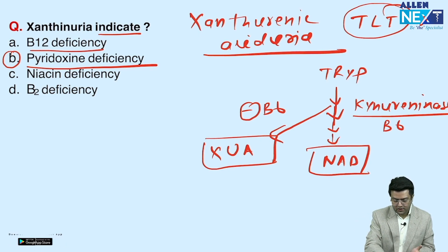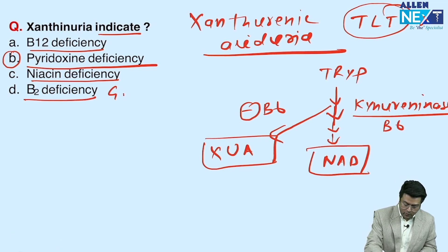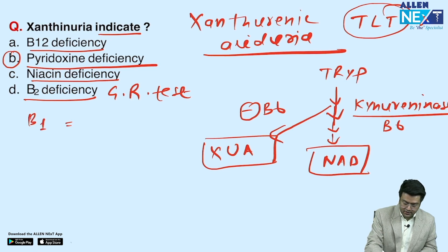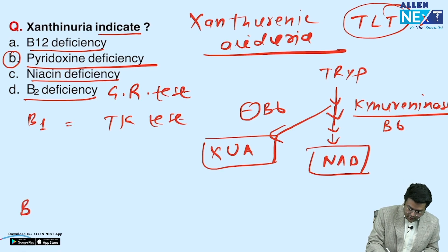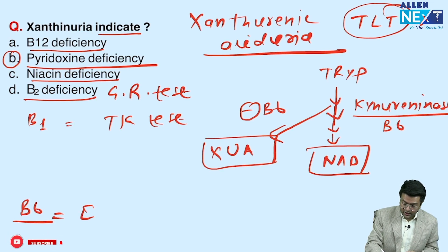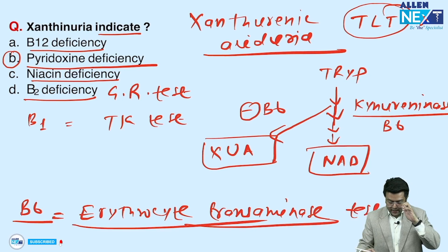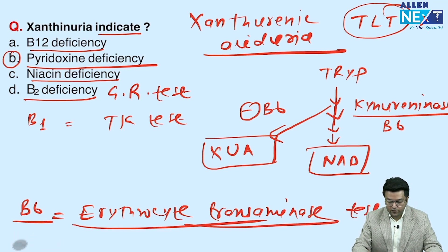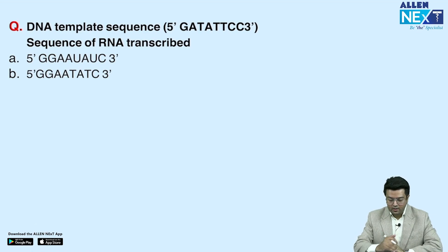Don't forget the name — tryptophan load test. B12 deficiency is not the answer, niacin deficiency is not the answer. For B2 deficiency, we use the glutathione reductase test. For B1, we use the transketolase test. For B6 diagnosis, there is also the erythrocyte transaminase test that can be used.